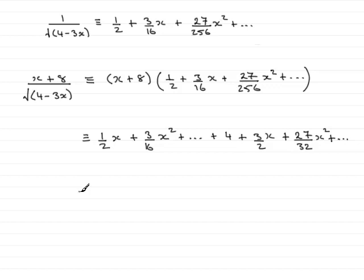So, all we need to do is just group up terms now, and what we have is that this is identical then to 4, and then the x terms, we have plus 2x. And when we group up the x squared terms, we should find you get 33 over 32 x squared, and the series would carry on.